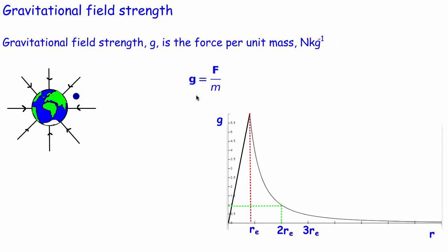It's given by the expression g = F/m. This expression you've really seen before, because the force you often think about is the weight, and weight is the mass times the gravitational field strength. So what it tells us is if we know the weight of an object and we know the mass of the object, we can work out the strength of the gravitational field that object is in.